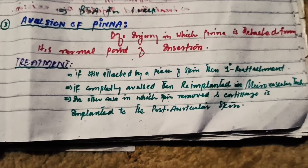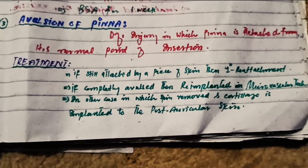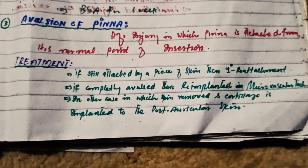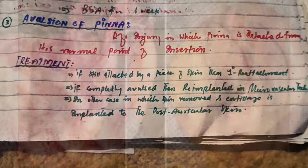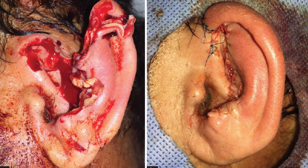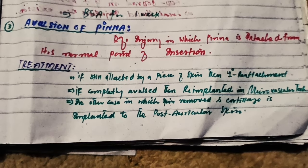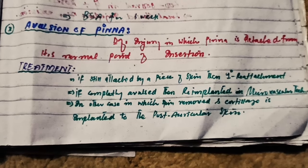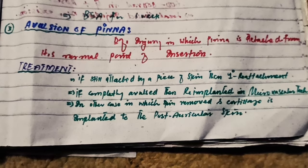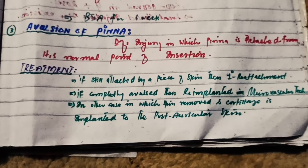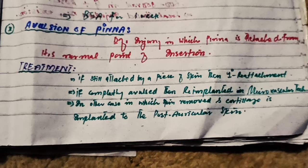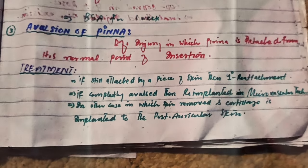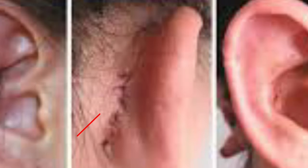There are three treatment conditions for avulsion. The first: if the auricle is still attached to its normal point of position by a piece of skin, it is reattached to its normal position. The second: if it is completely avulsed and detached from its normal point of insertion, it should be re-implanted using microvascular technique. The third: if the skin of the auricle is removed, the cartilage is implanted to the posterior skin.